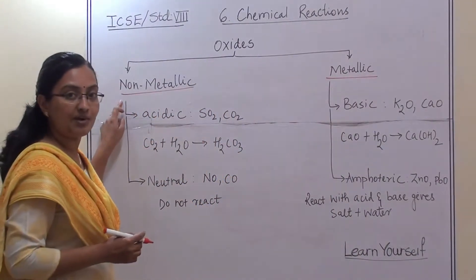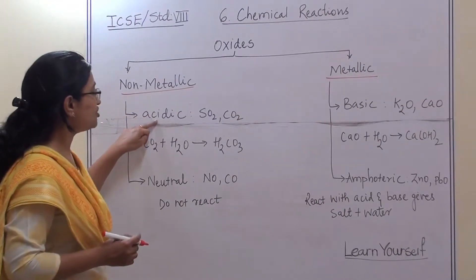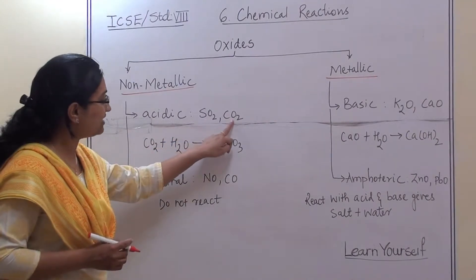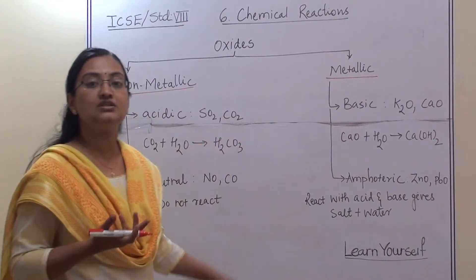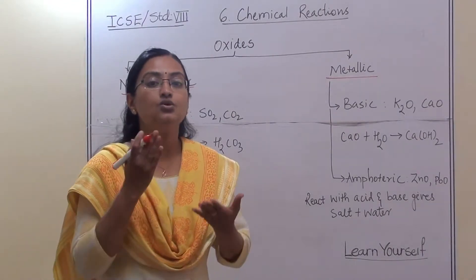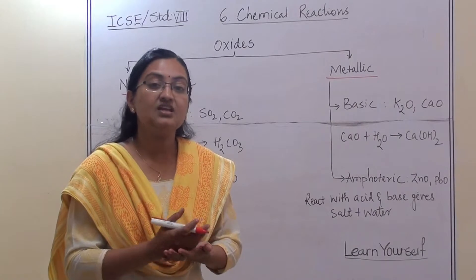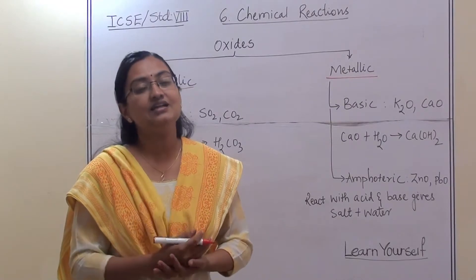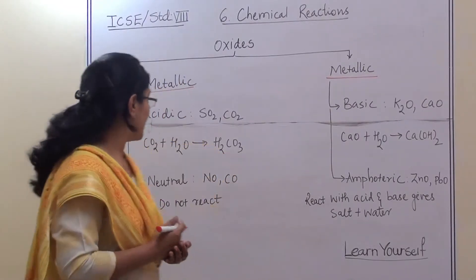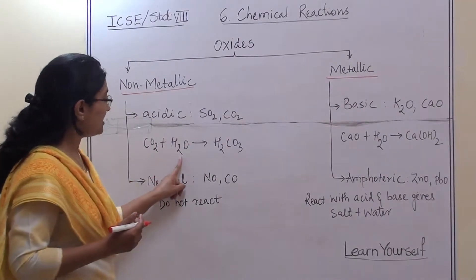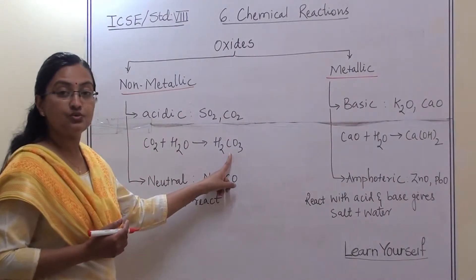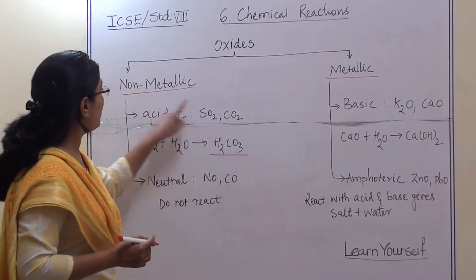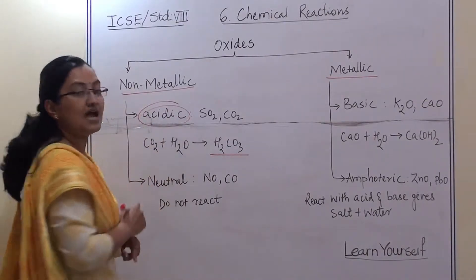Let us first look at non-metallic oxides. The nature of these oxides is acidic — for example, sulfur dioxide and carbon dioxide. How do we know the nature? When we mix those oxides with water, if they generate an acidic medium they are acidic, and if they generate a basic medium they are basic. So when carbon dioxide reacts with water, it gives us H2CO3, which is carbonic acid. That is why the oxides of non-metals are always acidic.